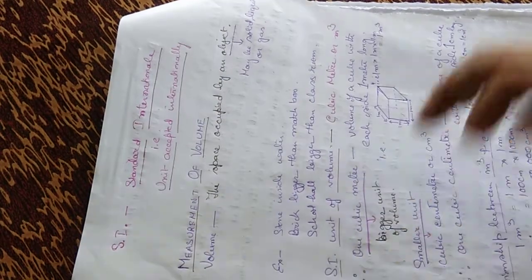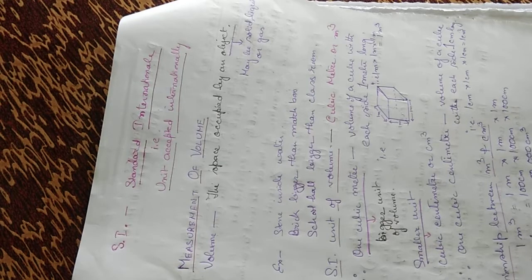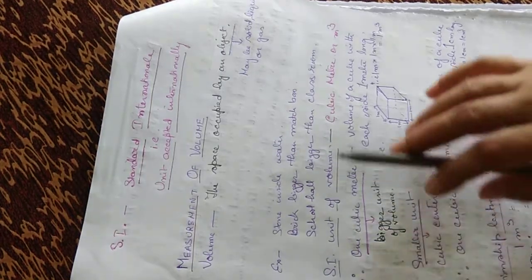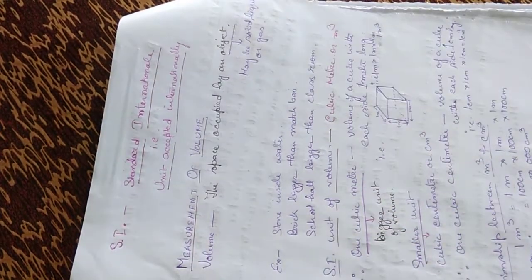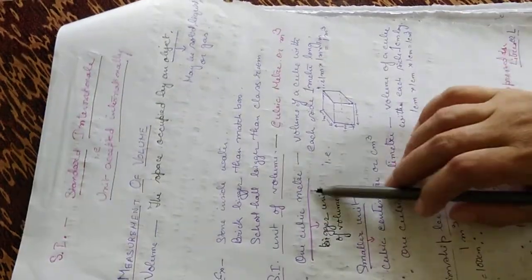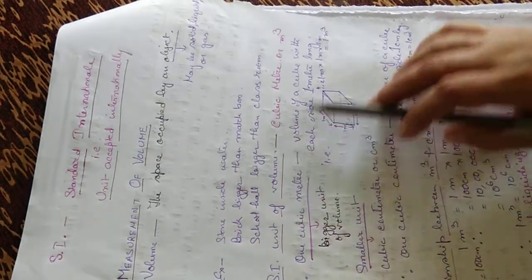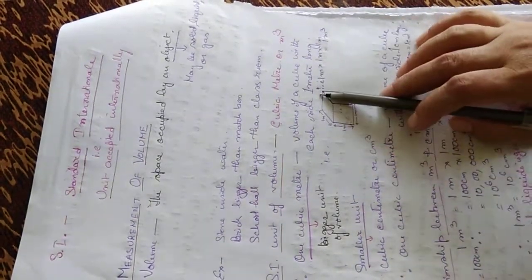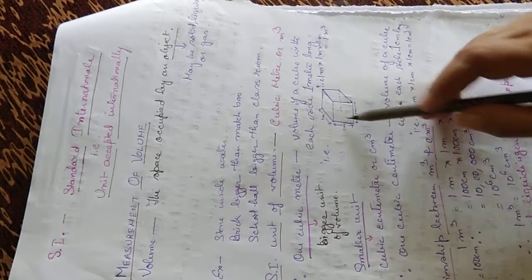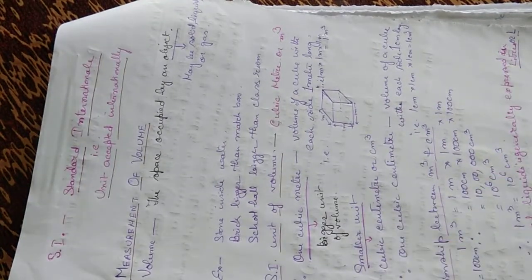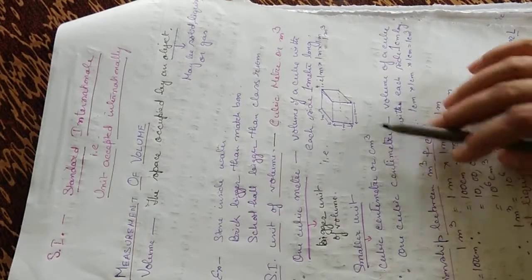A school hall is bigger than the classroom — the volume of the school hall is bigger because its length, breadth, and height all differ from those of the classroom. The SI unit of volume is cubic meter or m³. One cubic meter is the bigger unit of volume — it is the volume of a cube with each side one meter long, where length, breadth, and height are all one meter. The smaller unit of volume is cubic centimeter or cm³. One cubic centimeter is the volume of a cube with each side one centimeter long.